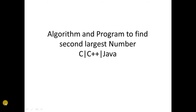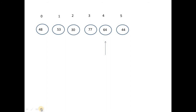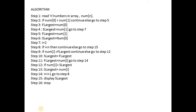First let us understand the algorithm and how we find the second largest number. Suppose this is an array which has six elements, with indexes from 0 to n minus 1, that is 5. Looking closely at this array with six elements, we can say that 64 is the second largest number. We need to find this with an algorithm. First we will discuss the logic, then go to the algorithm.